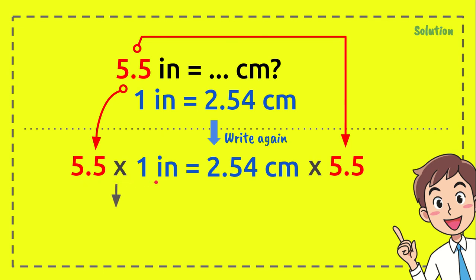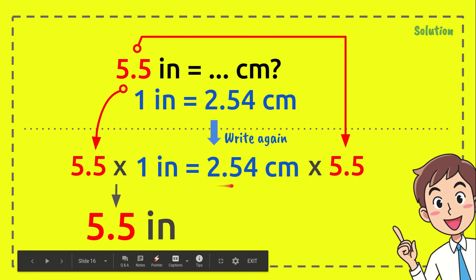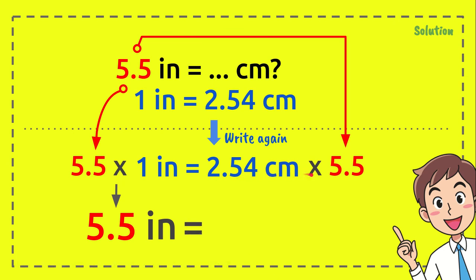Now 5.5 inch equals exactly 5.5. And now, let's multiply this. 2.54 centimeters times 5.5 equals 13.97 centimeters. And that's the answer of this question.